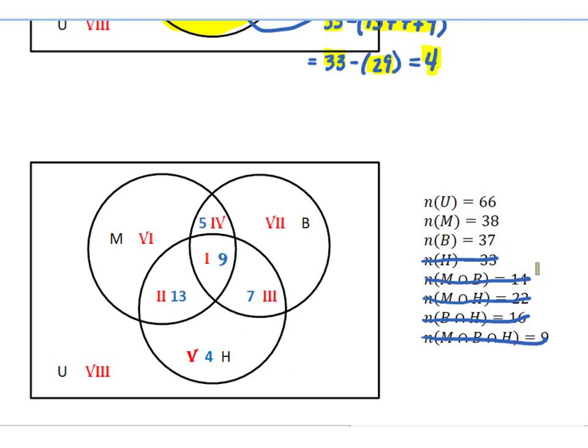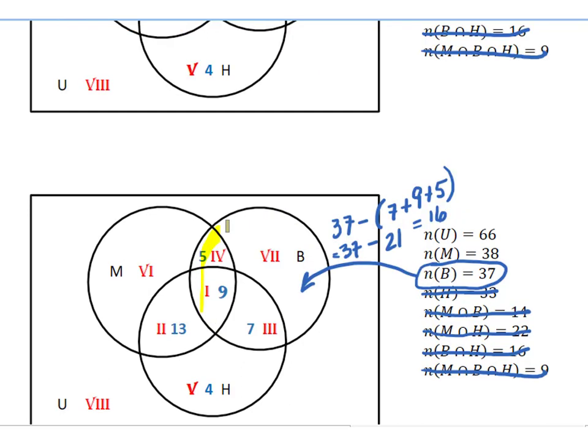Now let's move on to the next fact, the number in B. In the set B, which is the whole circle, we've already figured out that there are 5, 9, and 7 in regions Roman numeral 4, 1, and 3, respectively. Since there are 37 in B, we have to subtract 37 minus the amount that we've already labeled, 7 plus 9 plus 5, which is going to be 21. 37 minus 21 gives us 16 that are in just region 7 alone.